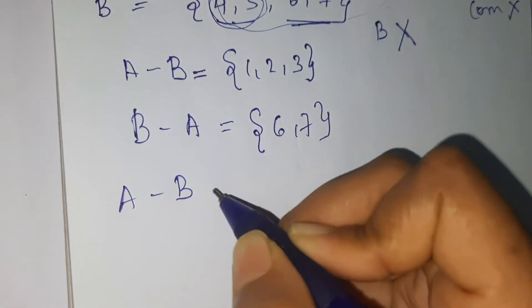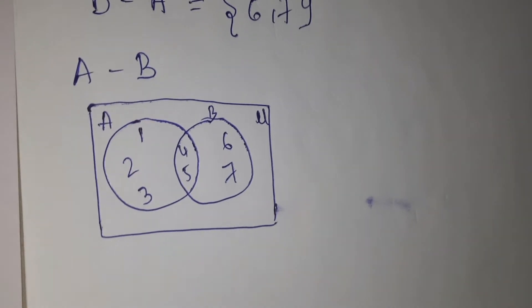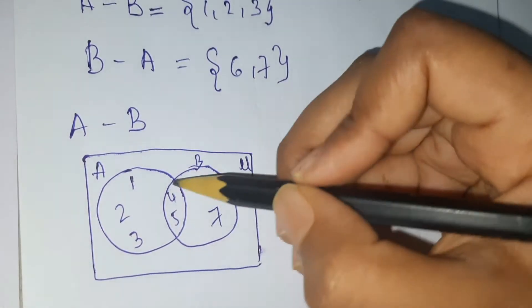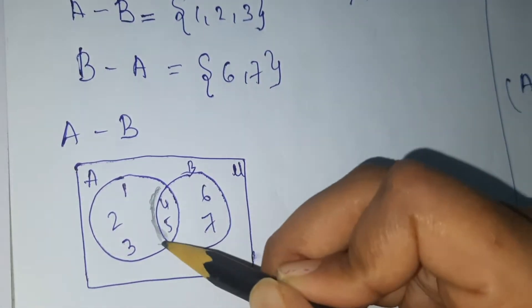So see here, this is the Venn diagram for A minus B. So I'm shading a certain region. See.